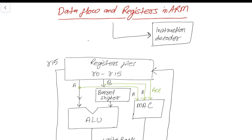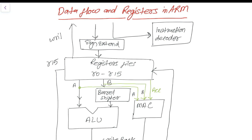There is another unit known as sign extend. This sign extend works when the register's data is only 8-bit or 16-bit, because each of these registers is 32 bits long, and the sign extend converts those smaller values to 32 bits.